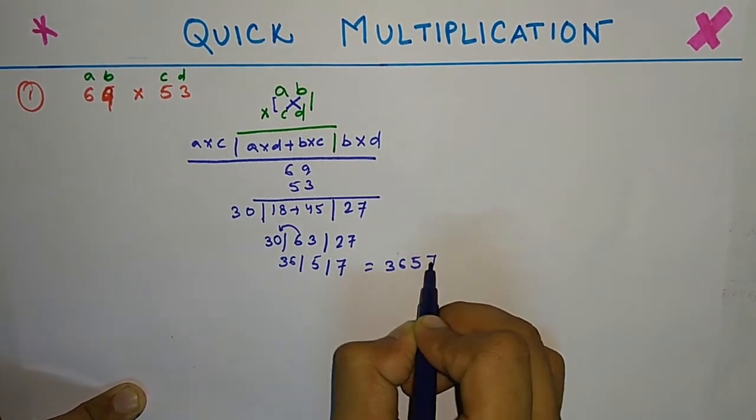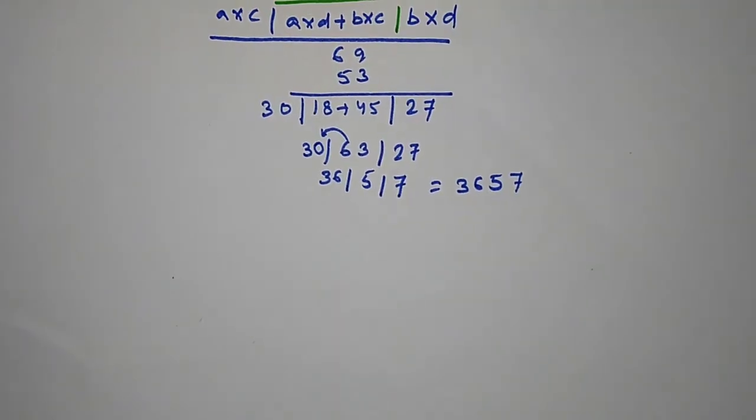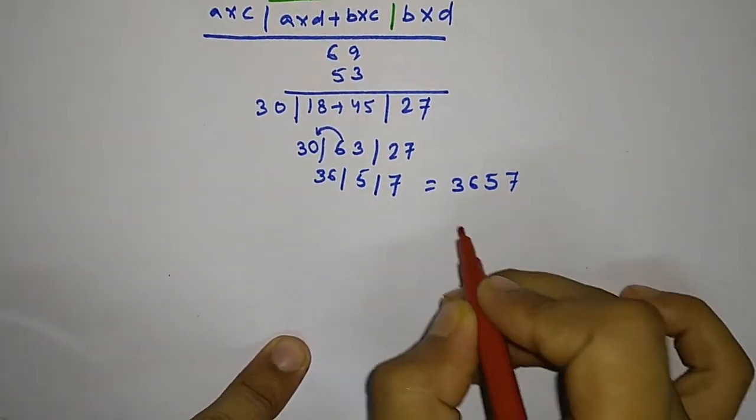This will be 65, so 5, and 6 will be carried over to give 36. So our answer will be 3657.